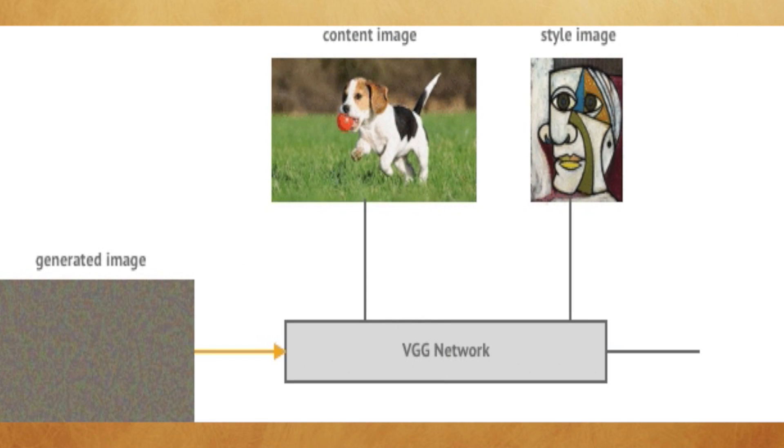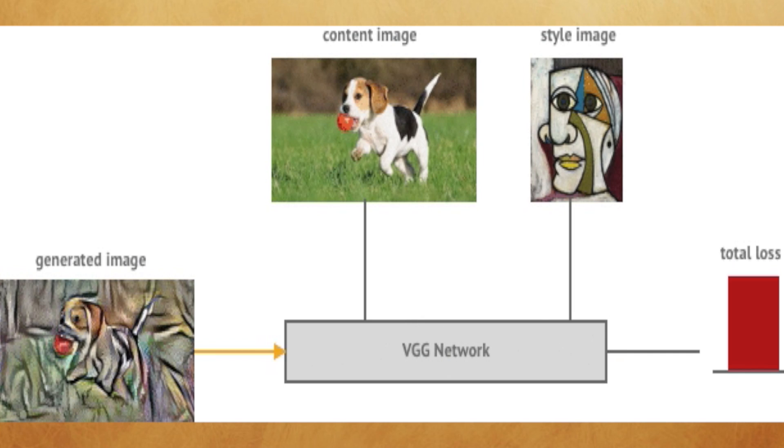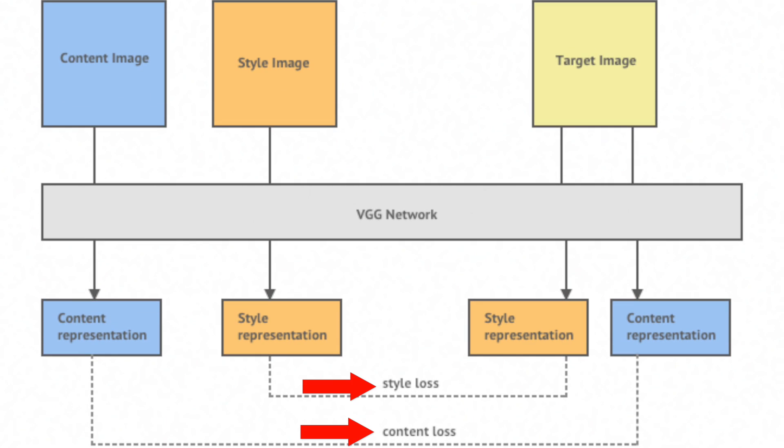We'll frame this style transfer task as an optimization problem where we have some loss function that measures an error value that we want to minimize. Our loss function in this case can be decomposed into two parts, content loss and style loss. We'll initialize a total loss to zero and add each of them to it. First the content loss.